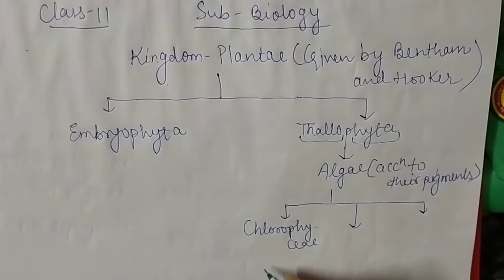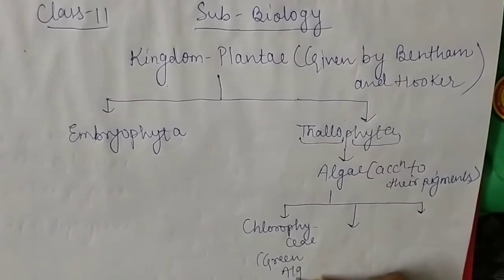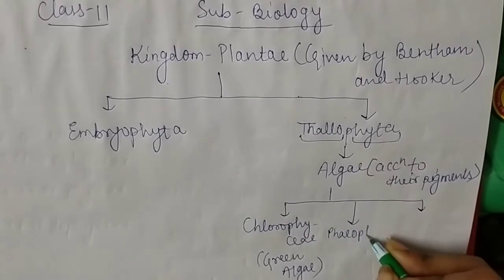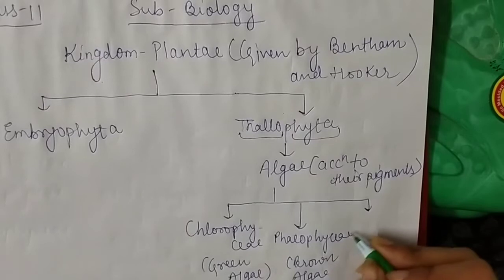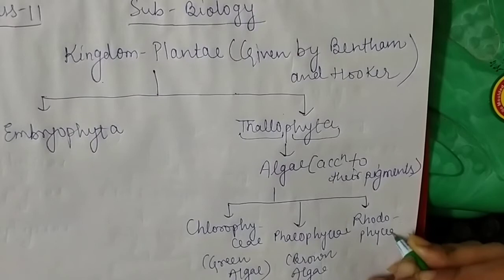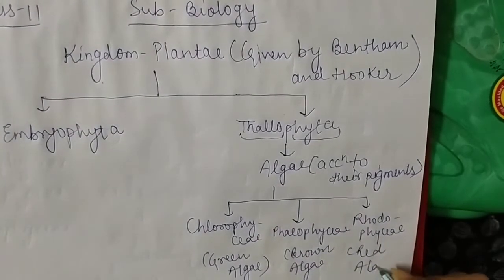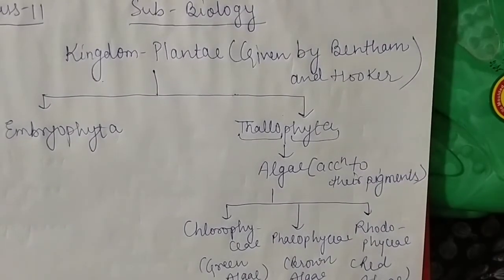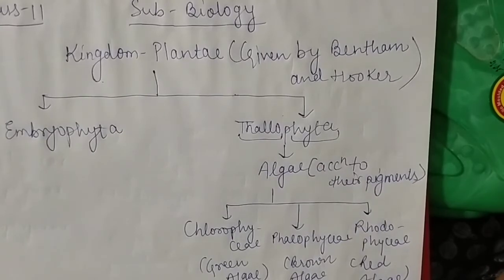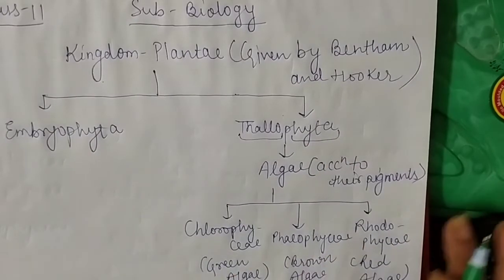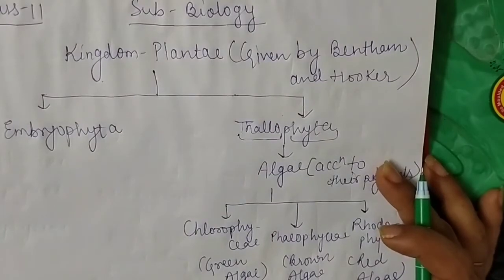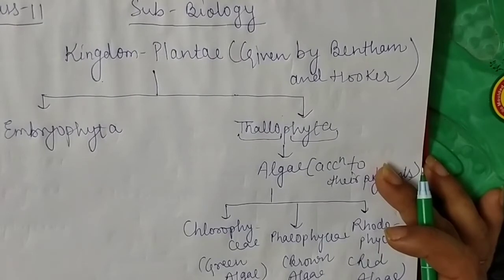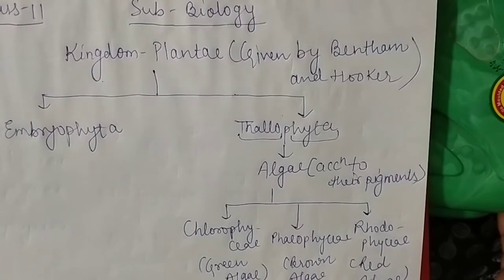The first class of algae is Chlorophyceae, known as green algae. The second is Phaeophyceae, known as brown algae. The last category is Rhodophyceae, known as red algae. These different names are given because of the presence of different pigments in their thallus. We will discuss which pigments give them a specific color in further sessions when we study algae in detail.